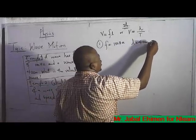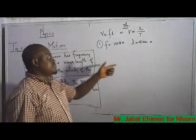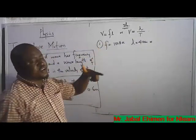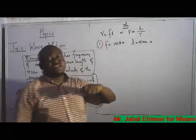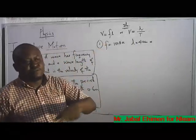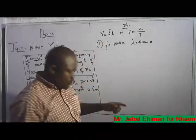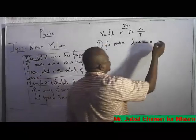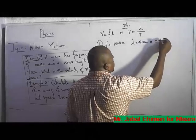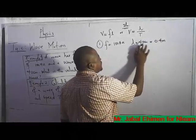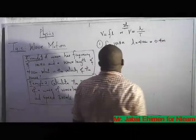We understand that wavelength is measured in meters, and 40 centimeters is not a standard value for measurement — it's a lower value. So convert it to the standard value, which is 0.4 meters, by dividing 40 by 100. That gives us 0.4 meters.